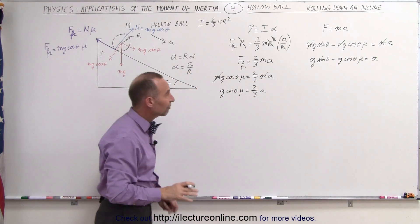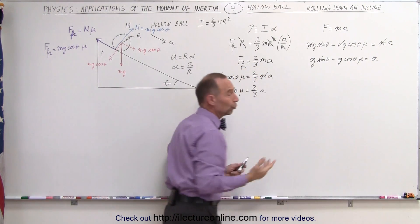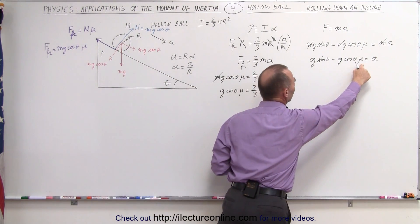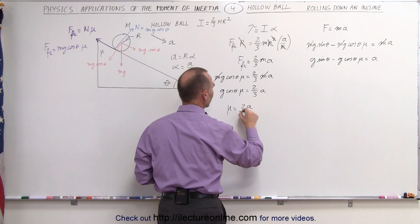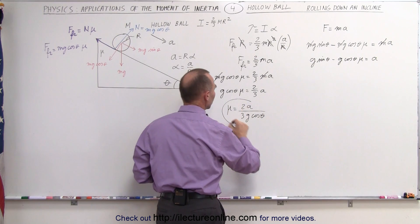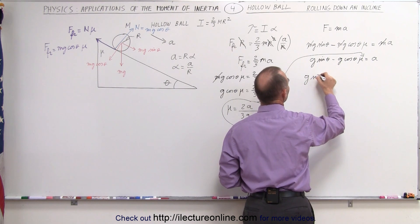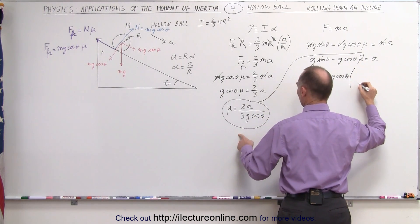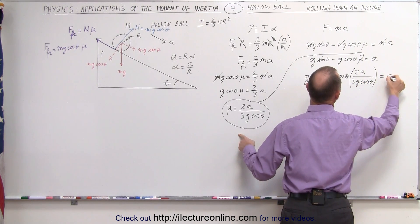Notice these two equations have two unknowns: acceleration and mu. We can eliminate mu by solving one equation for mu and substituting into the other. From the first equation, mu equals two times acceleration divided by three g times cosine of theta. Substituting this into the second equation: g sine theta minus g cosine theta times (2a divided by 3g cosine theta) equals acceleration.